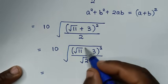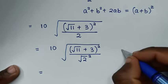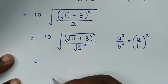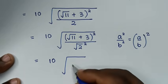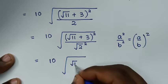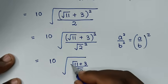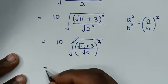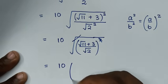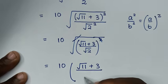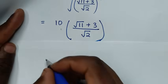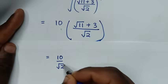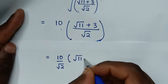Using the rule that square root of (a squared over b squared) equals a over b, we get 10 times (square root of 11 plus 3) over square root of 2.